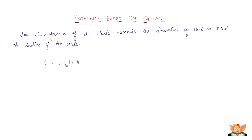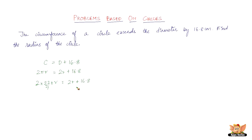For example, if the diameter is 10, the circumference would be 26.8. Now, circumference is given by 2πr and diameter is 2r, so the equation becomes: 2πr equals 2r plus 16.8. With π as 22/7, we get 2 times 22/7 times r equals 2r plus 16.8, which gives 44r/7 equals 2r plus 16.8.